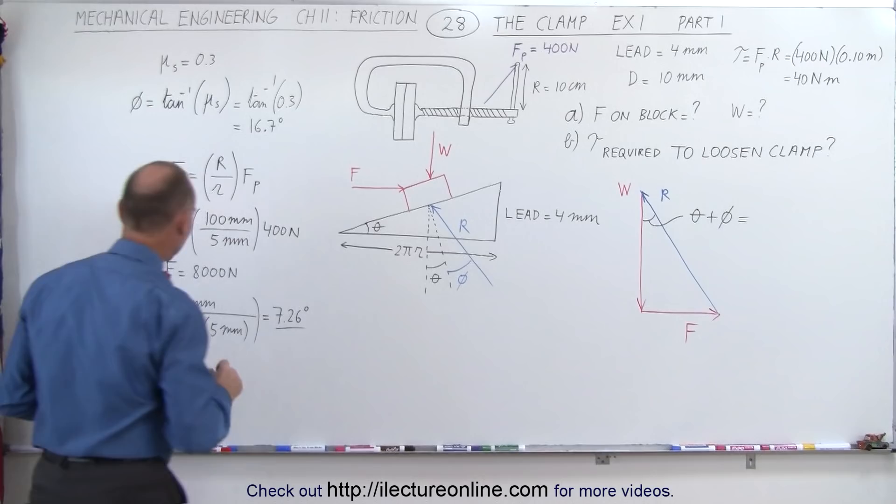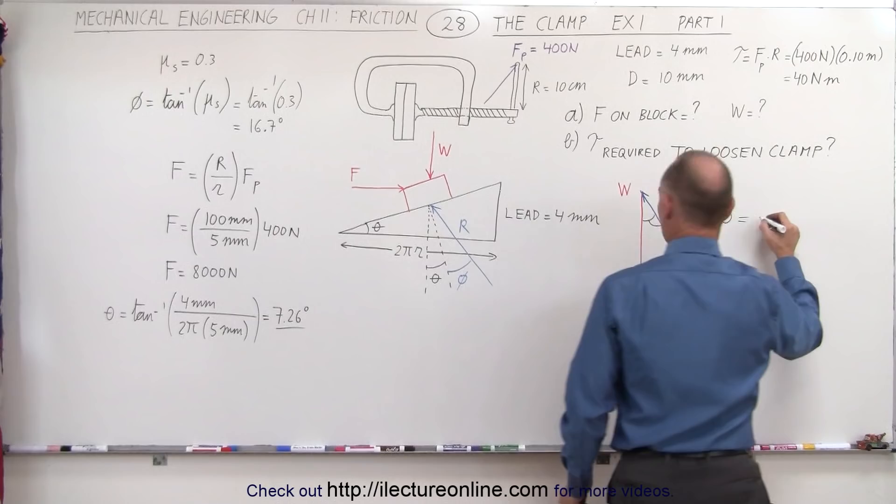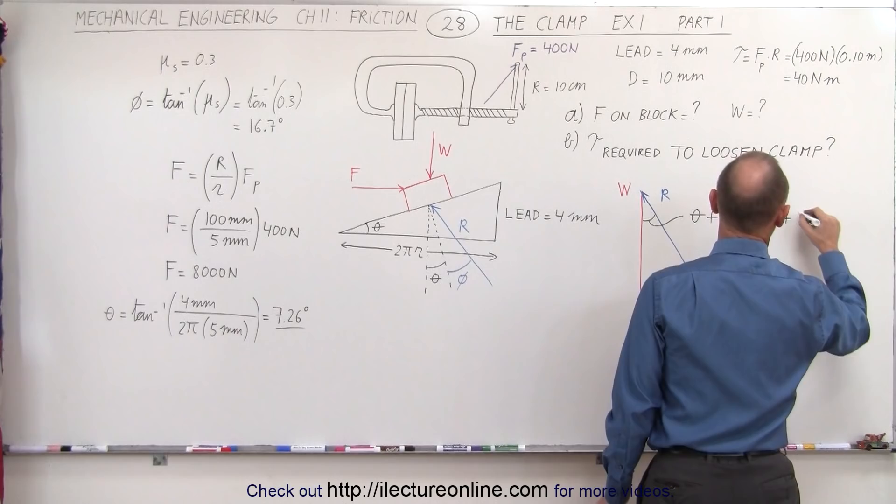That's theta. Let's see if we got that right. So that's 4 divided by 2 pi times r. Correct. And so we add the two angles together. So that would be 7.26 degrees plus phi, which is 16.7 degrees.